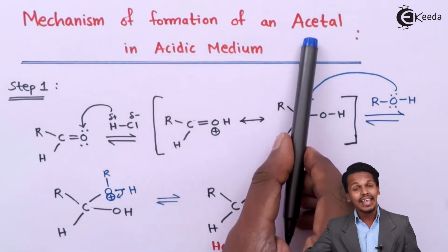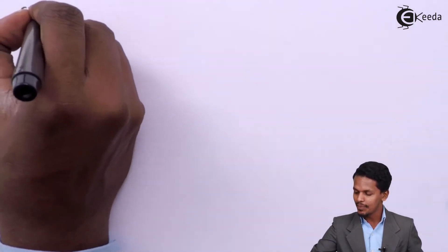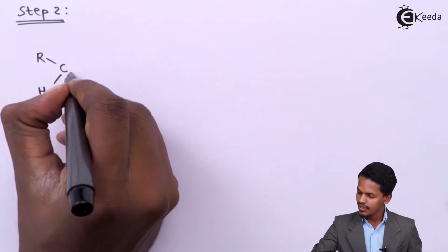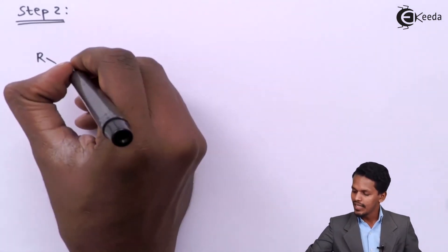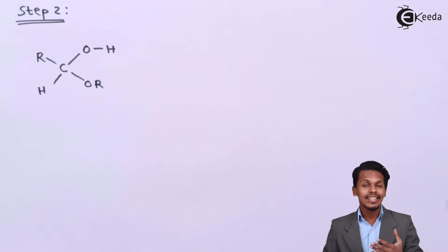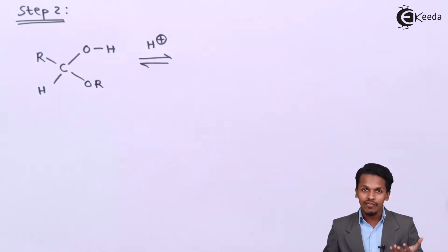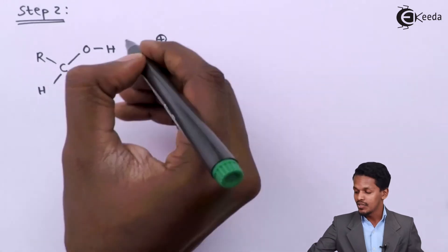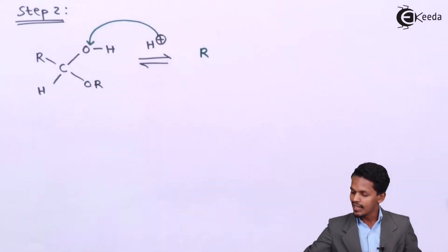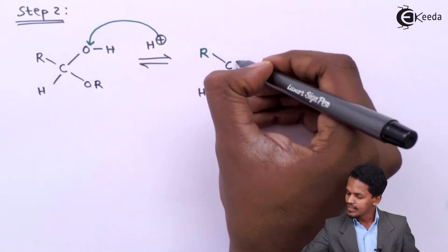Now we need to form a full acetal, so we discuss step two. In step one we obtained the hemiacetal: RCH(OR)(OH), and we recovered H⁺ as the acid catalyst. This H⁺ will try to acquire a more electronegative atom, so it will approach the OH oxygen atom of the hemiacetal and form a complex RCH(OR)(OH₂⁺).